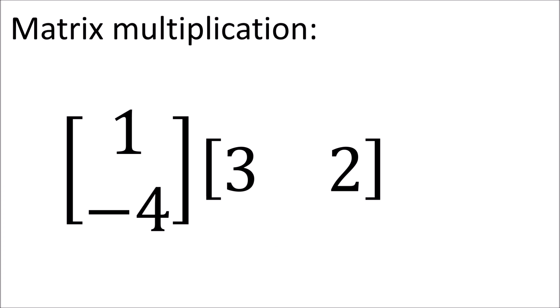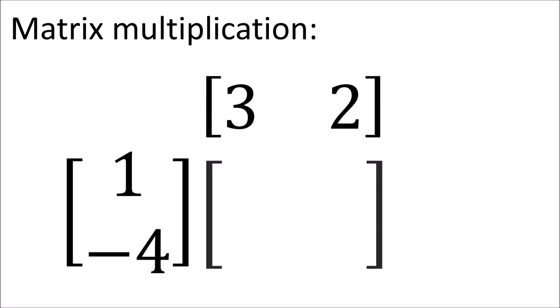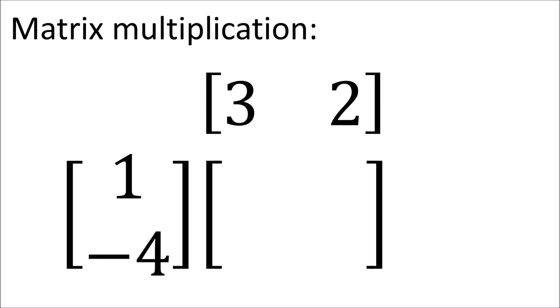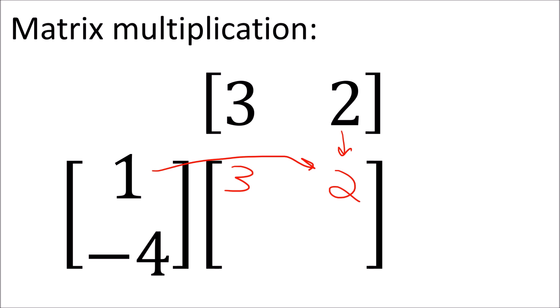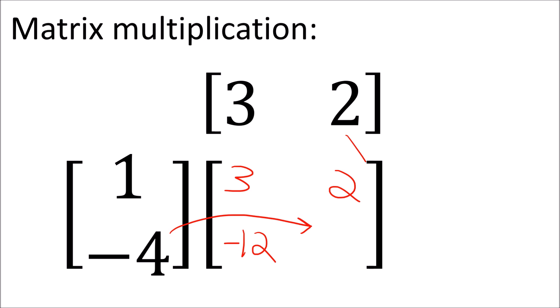Before we start looking at spinners, let's review basic 2x2 matrices. Using array multiplication, we can multiply a column by a row to get a 2x2 matrix. We just arrange them and follow the standard rules of array multiplication: 1 times 3 equals 3, 1 times 2 equals 2, negative 4 times 3 equals negative 12, and negative 4 times 2 equals negative 8.